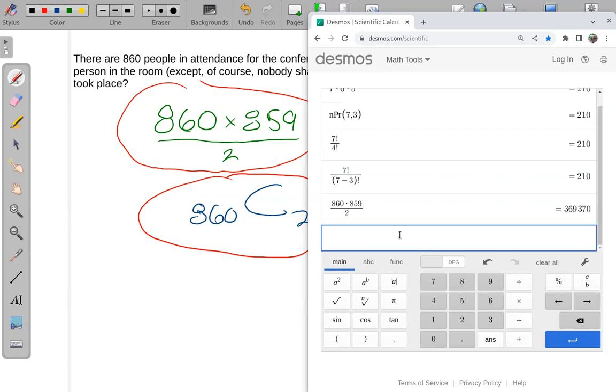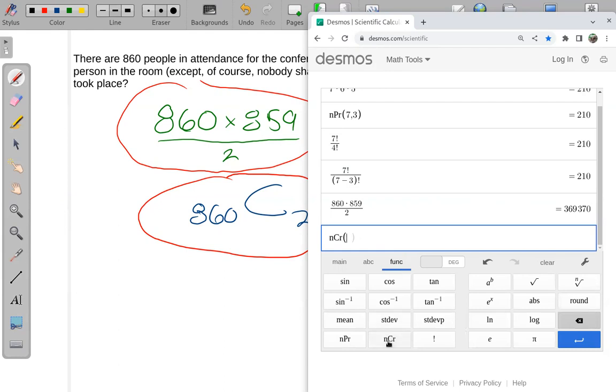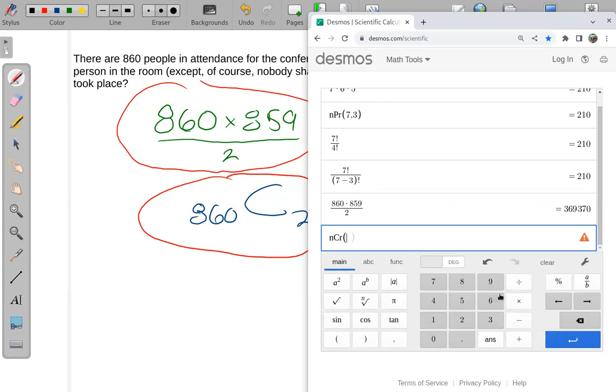Alternatively, we could use the combination tool here. And on this calculator, I select the combination button first, and then I would say out of 860, I want to grab them two at a time. And there I can see I get the same number as above.